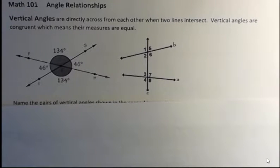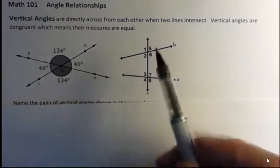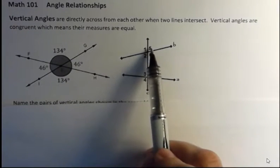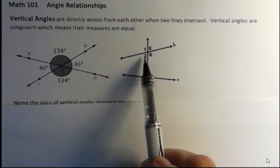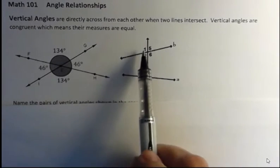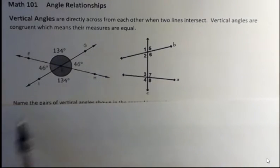They add up to 180. So in this picture, angle one and five add to 180, two and six add to 180, one and two add to 180, and five and six add to 180.